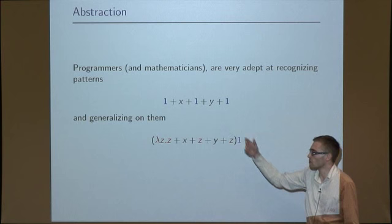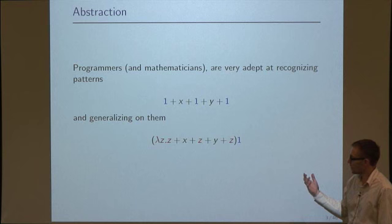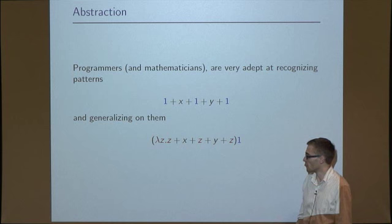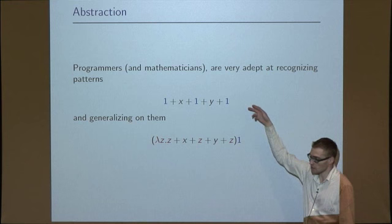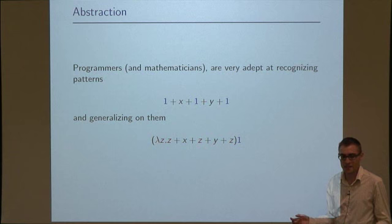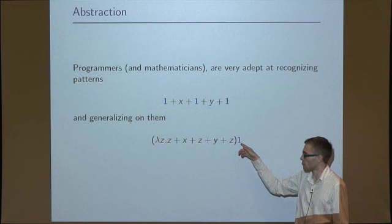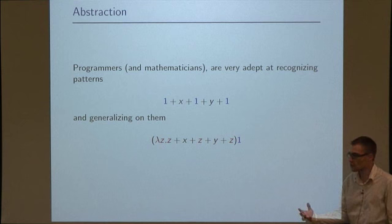This is a trivial example, but if you have 1 plus x plus 1 plus y plus 1, you can say, here's a pattern: 1 appears plenty of times, and I can express this pattern by introducing a lambda here, where every occurrence of 1 can be replaced by this abstract variable z, and then I can apply this to 1 and it has the same meaning. You can imagine if 1 is a very complex computation, by abstracting here you've saved time, because you only need to do this computation once. The abstraction allows you to reunite all these individual computations into one computation. But abstraction is also useful for mental processes.